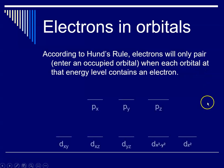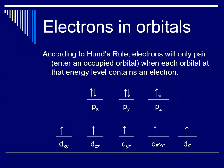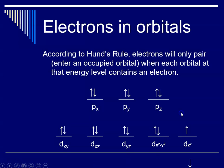For the P sublevel: the first, second, and third electrons each go into separate orbitals, then the fourth electron pairs with opposite spin, followed by the fifth and sixth. For the D sublevel: the first through fifth electrons each occupy their own orbital, and then since every orbital has one electron, the sixth through tenth electrons are forced to pair up.